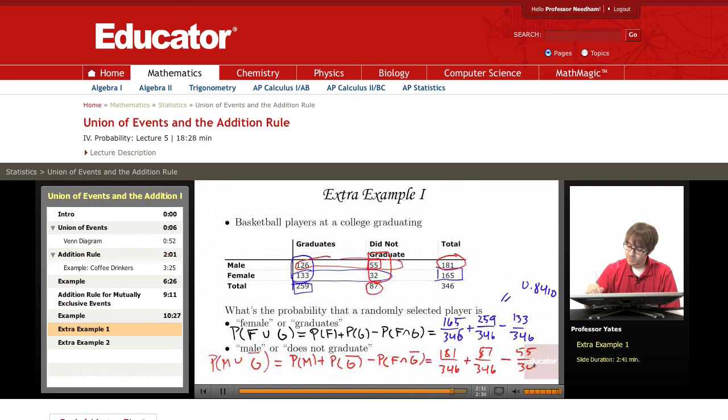So I'm subtracting out 55 over 346. So this should give you about 0.6156.